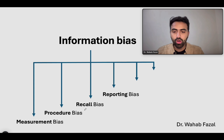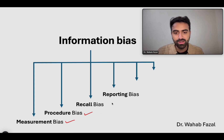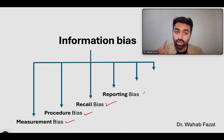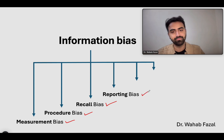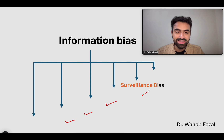So far: measurement bias — faulty tool; procedure bias — treated the two groups differently; recall bias — people with bad diseases remember using bad things; reporting bias — you report wrongly. The next thing we'll talk about is surveillance bias.